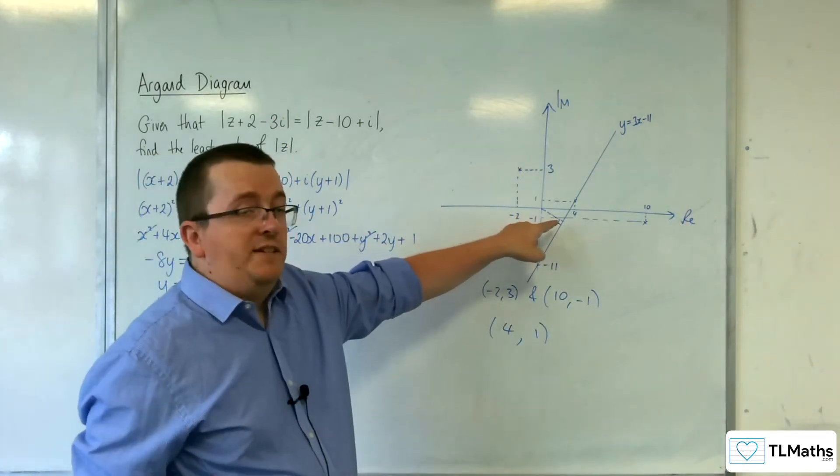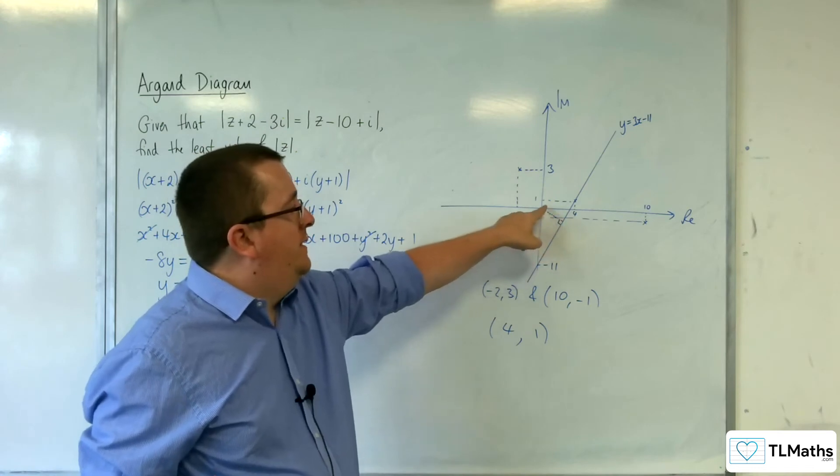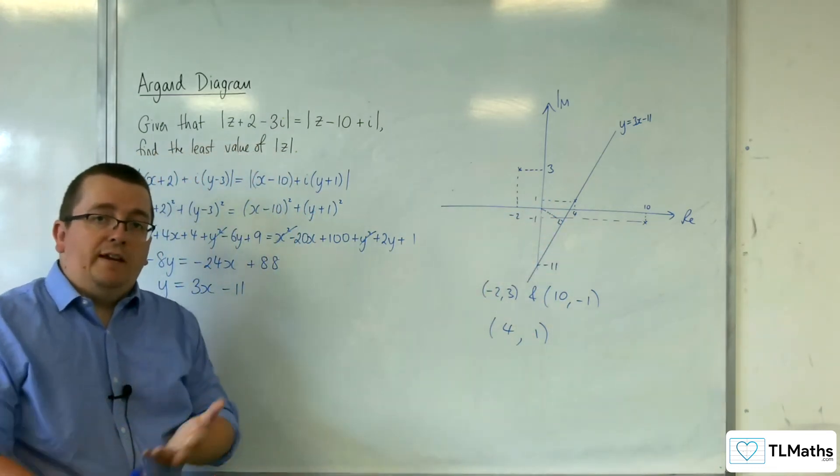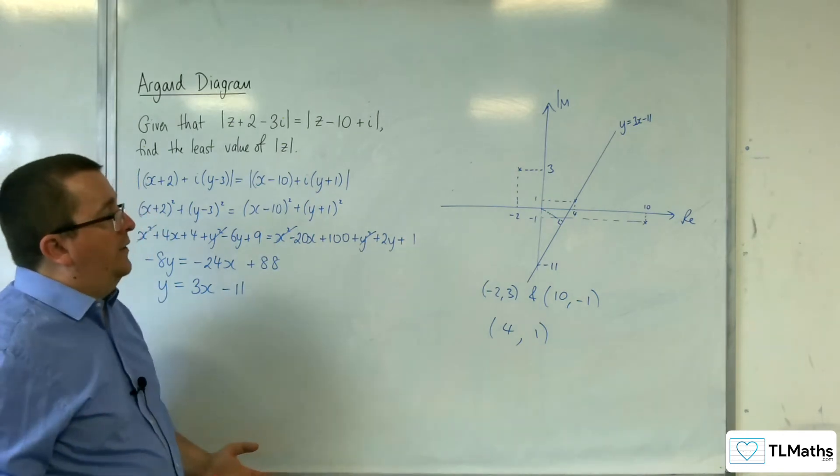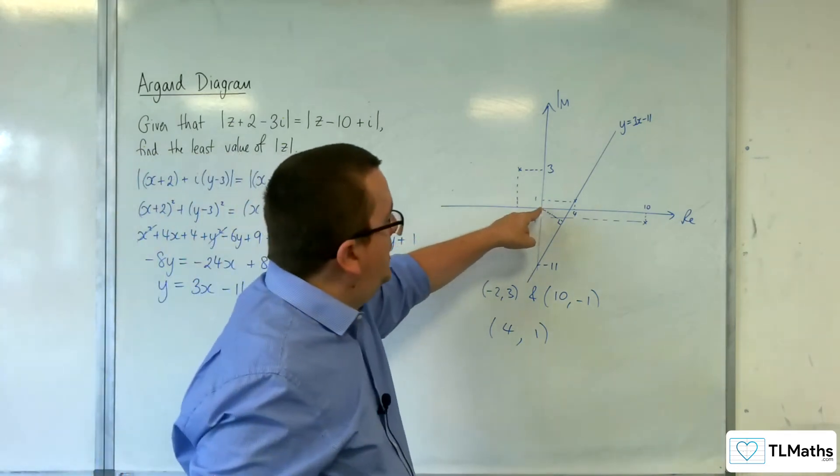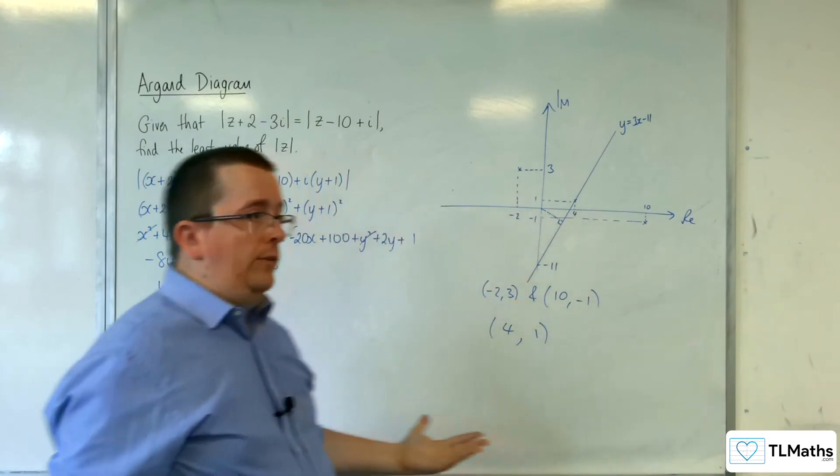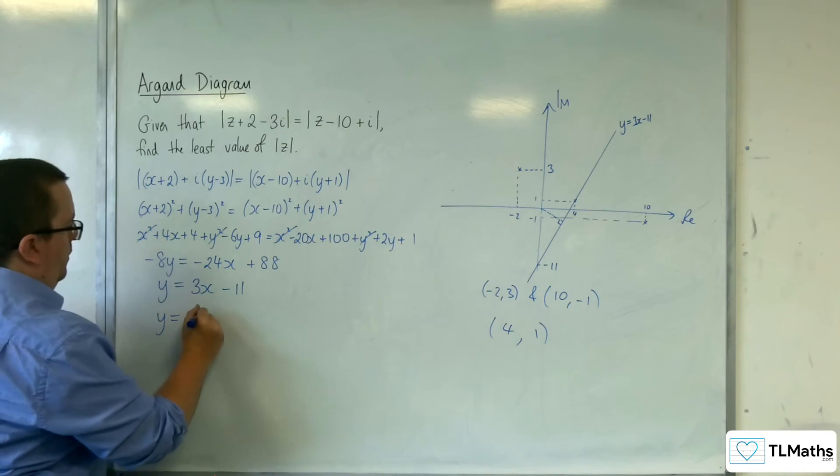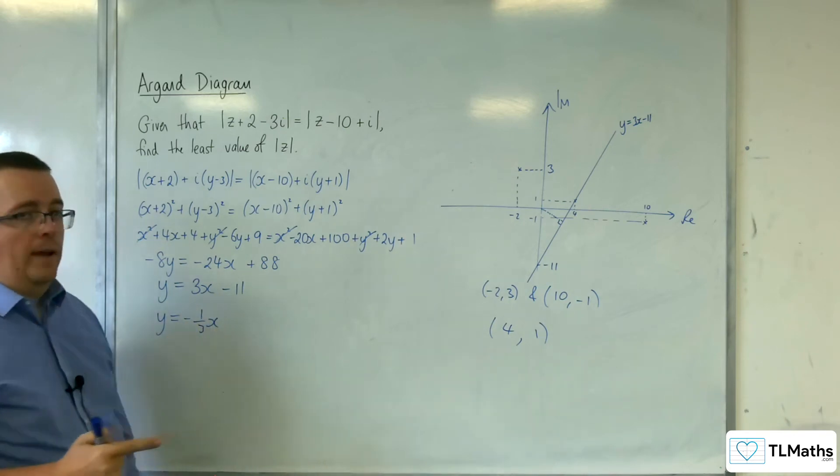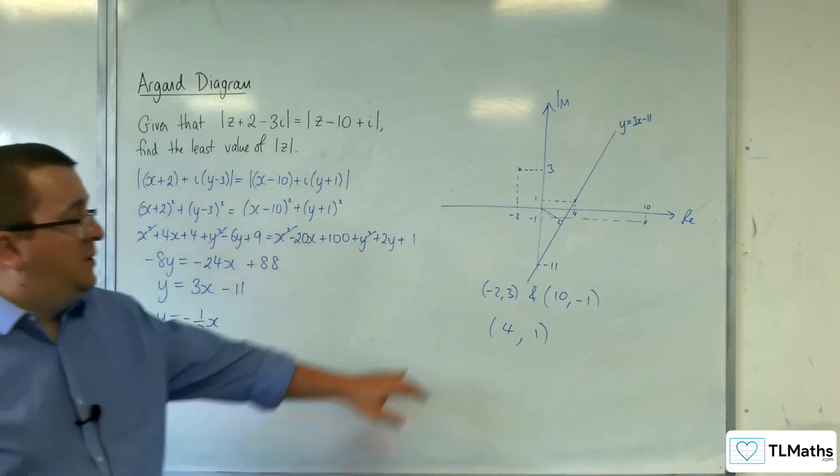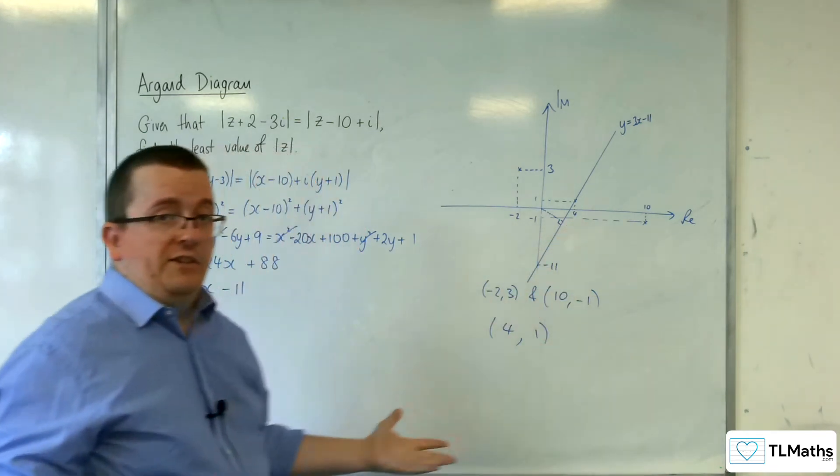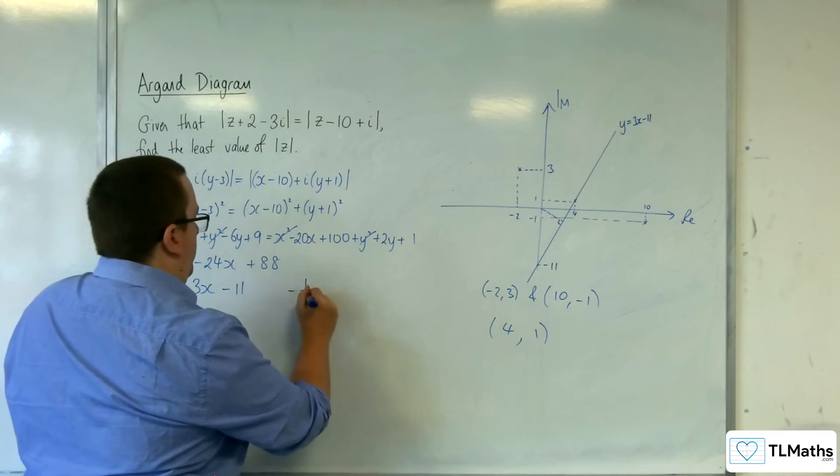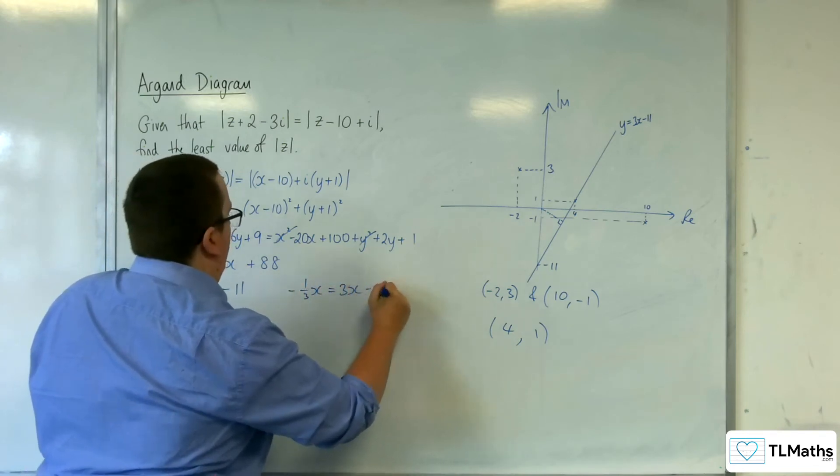Now we want to find that distance there. So that line there will have a perpendicular gradient, that's minus 1 third x. So that line there is actually just y equals minus 1 third x. We want the intersection of these two lines. That will give me the point of intersection, and then I can find the distance to 0, 0. So minus 1 third x is equal to 3x take away 11.